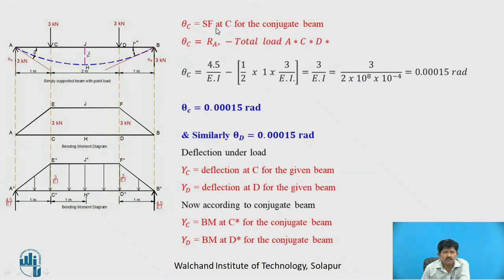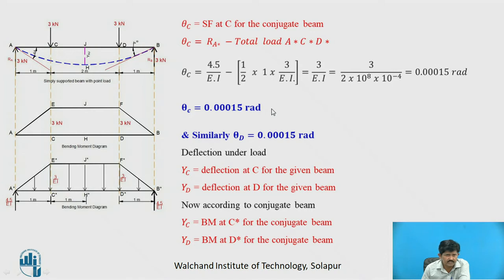θC equals the shear force at C in the conjugate beam, considering the left portion. That is RA* minus the triangular load from A* to C*, which is (1/2) × base × height. So θC = 4.5/EI − (1/2 × 1 × 3/EI) = 0.00015 radians. As the loading is symmetric, θD = 0.00015 radians as well.